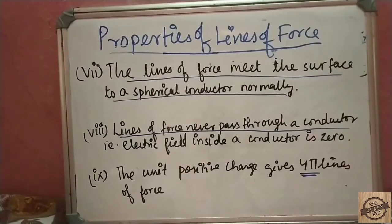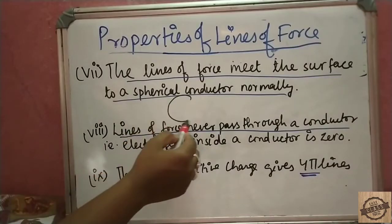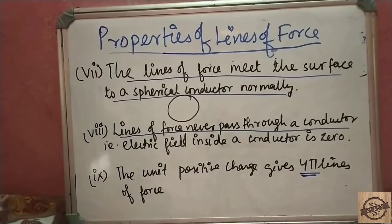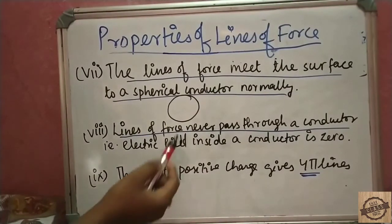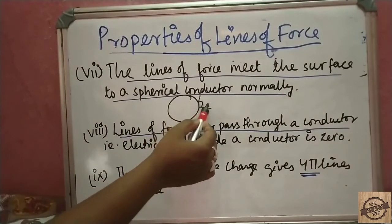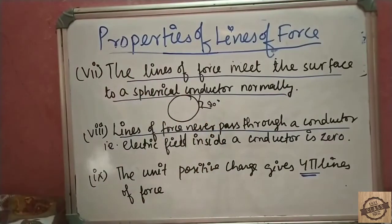The next property: lines of force meet the surface of a spherical conductor normally — that is, at 90 degrees. The lines of force are perpendicular to the surface of the spherical conductor.